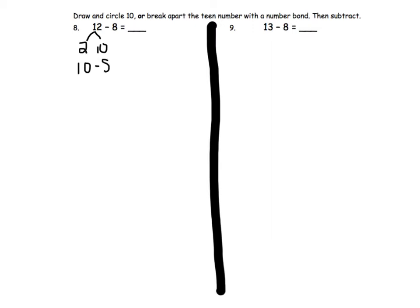10 minus 8 equals 2. We will then take that 2 and add it to the remaining number 2. 2 plus 2 equals 4, so 12 minus 8 equals 4.